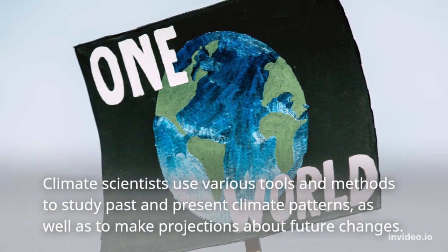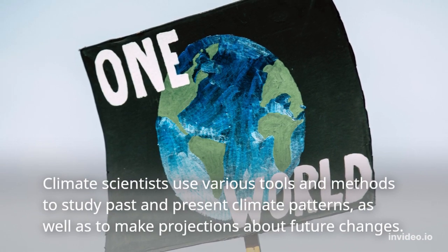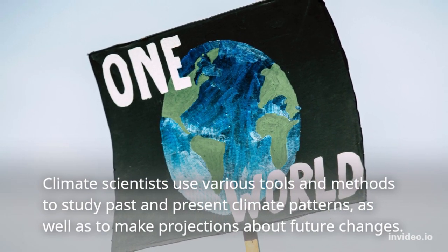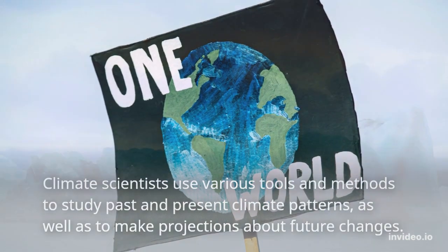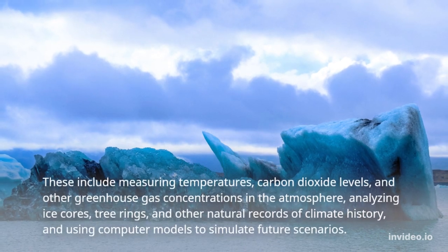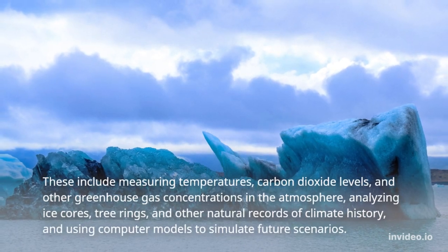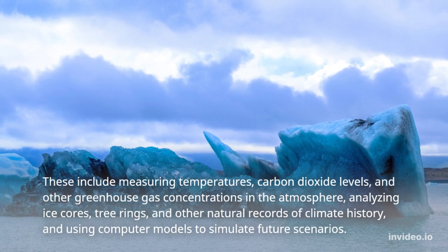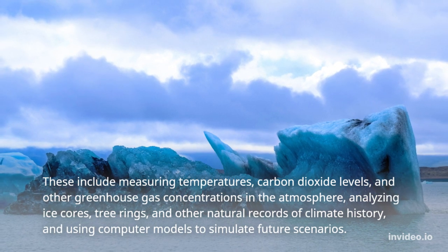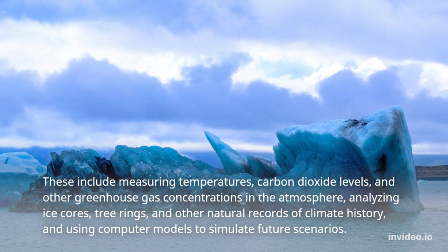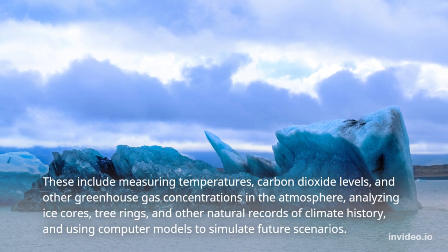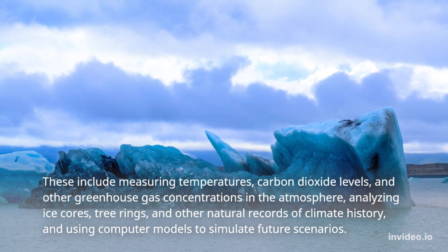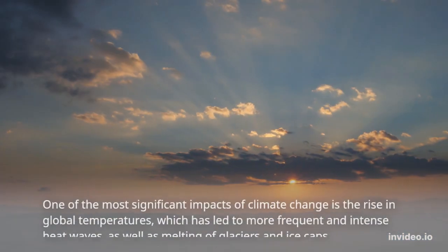Climate scientists use various tools and methods to study past and present climate patterns, as well as to make projections about future changes. These include measuring temperatures, carbon dioxide levels, and other greenhouse gas concentrations in the atmosphere, analyzing ice cores, tree rings, and other natural records of climate history, and using computer models to simulate future scenarios.